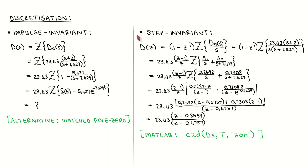The second discretization method is step-invariant discretization. The discrete time transfer function is given by 1 minus z-to-the-minus-1 times the z-transform of the designed continuous time transfer function divided by s. After performing partial fraction expansion using the Laplace and z-transform tables, combining the two terms and some manipulation, we arrive at this result. Instead of doing this calculation by hand, one could also use MATLAB's C2D function with the argument ZOH.